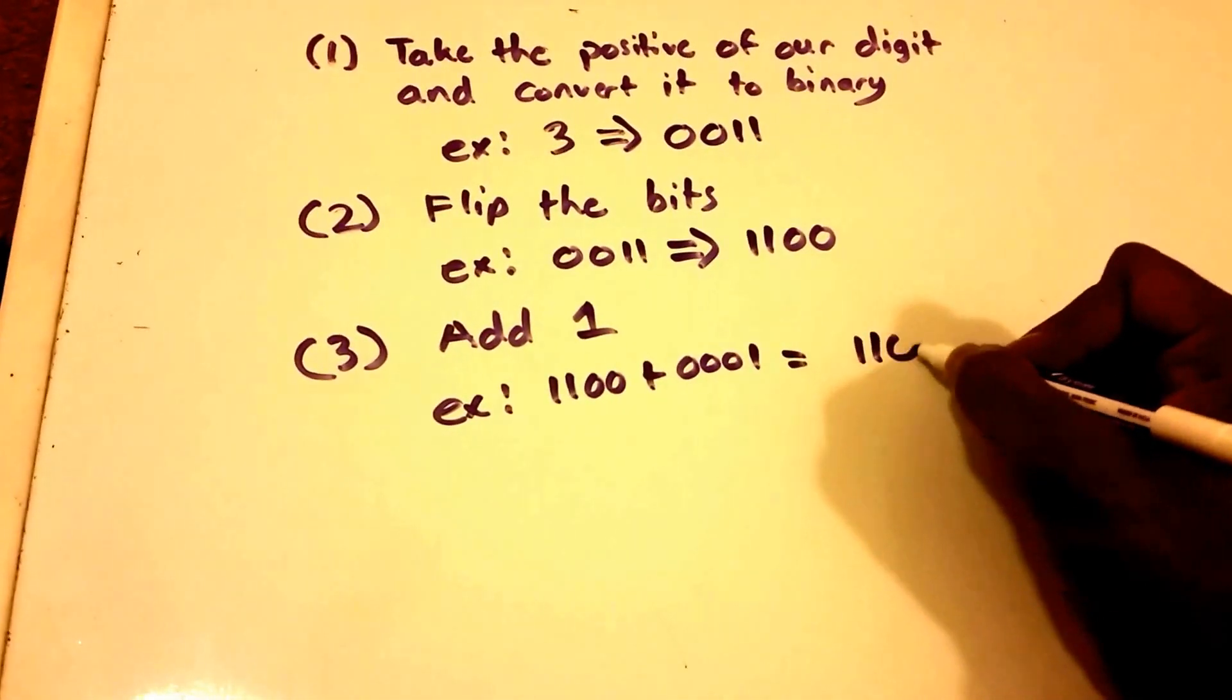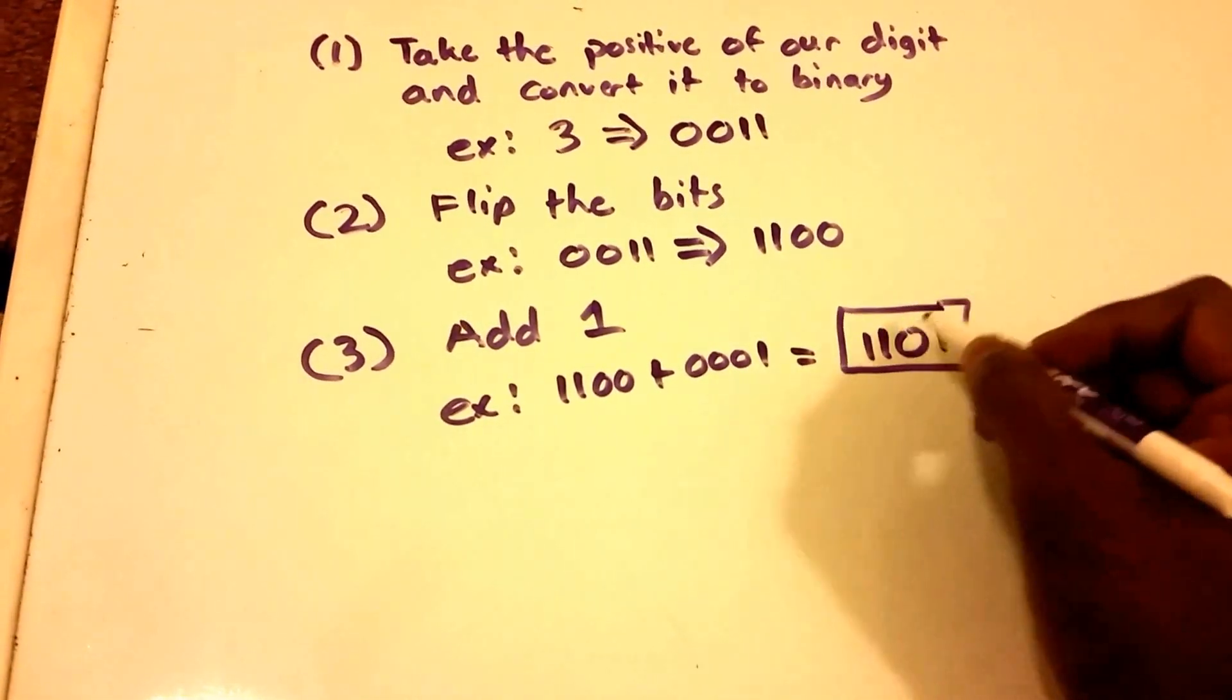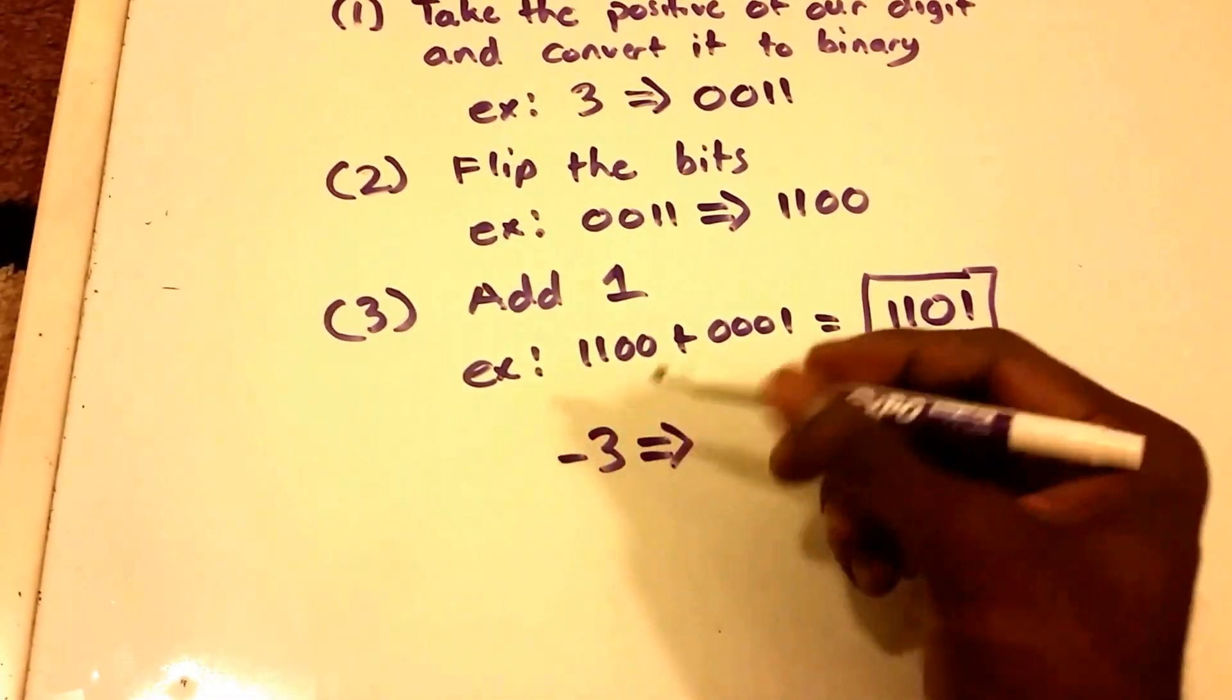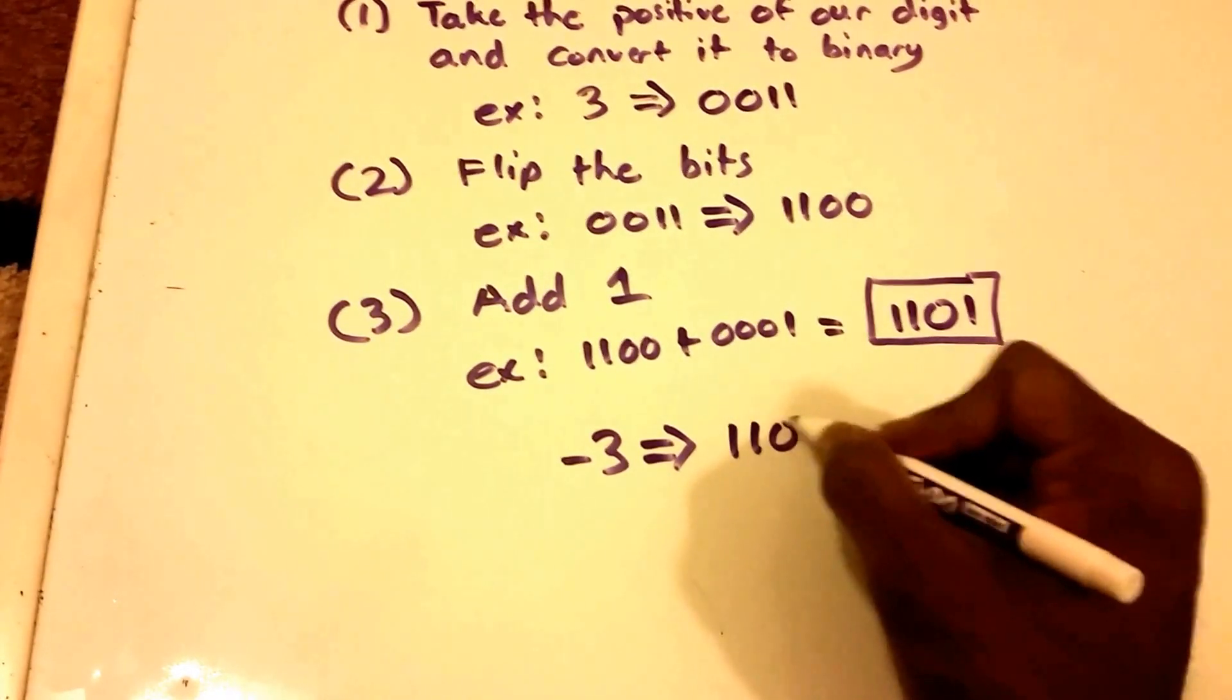Okay, so this means that negative three using the two's complement system is 1101. That's our answer.